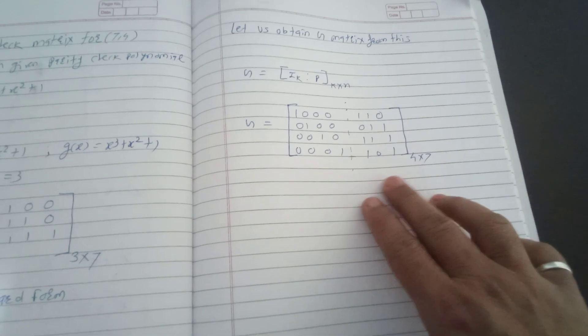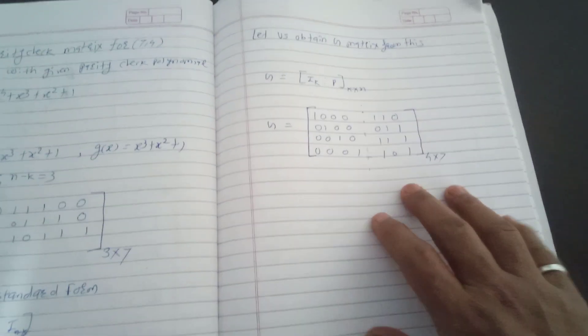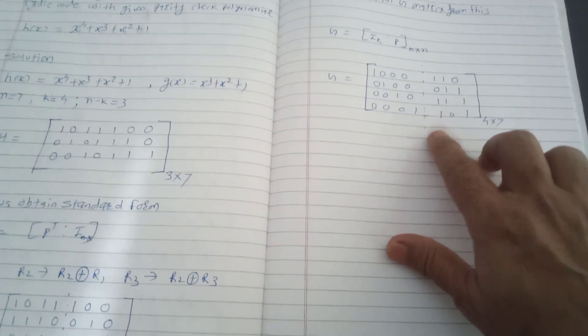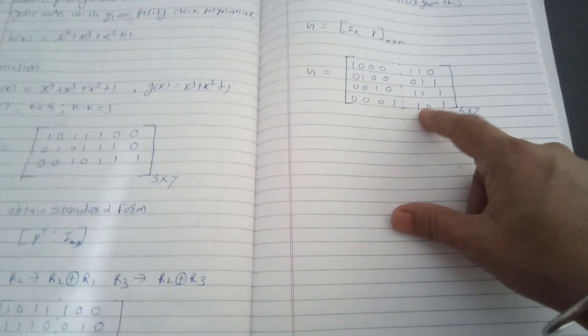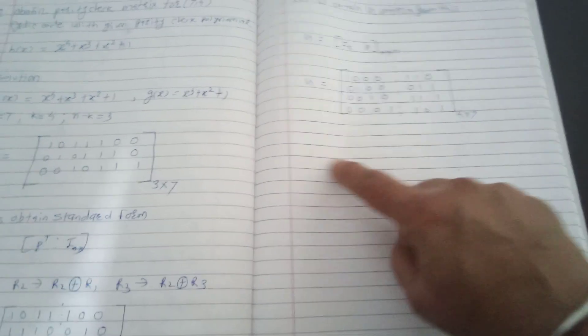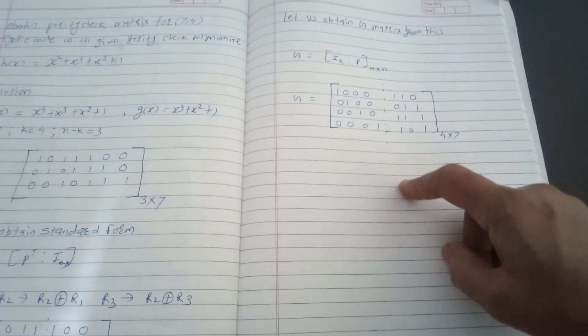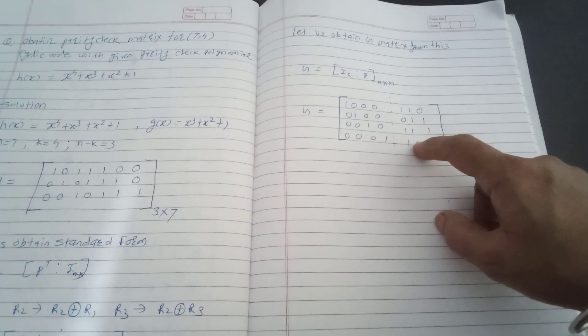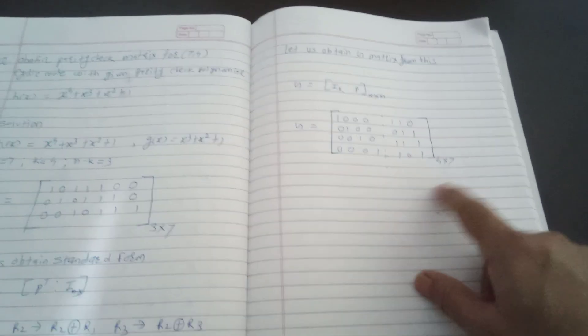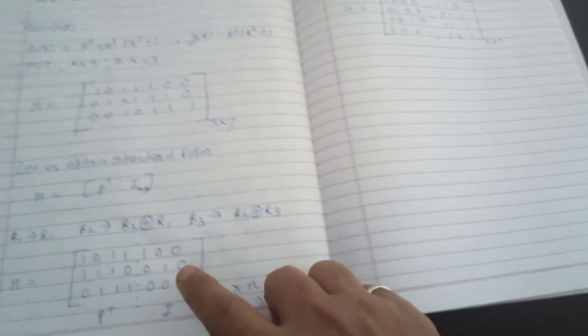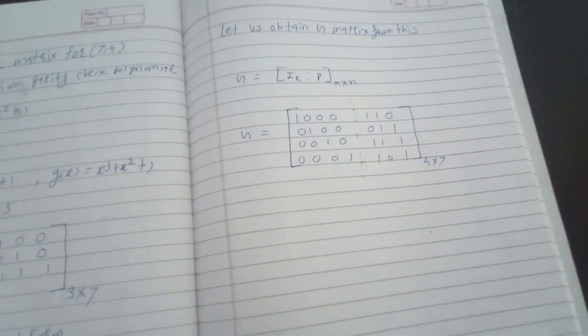In problems, you are typically given the generator matrix and asked to find the parity check matrix. From this generator matrix, you can obtain the parity check matrix by taking the transpose of P. Write the columns of P as rows: first row 1 0 1 1, second row 1 1 1 0 (all seven columns), and then append the 3×3 identity matrix on the right. That completes the parity check matrix derivation.